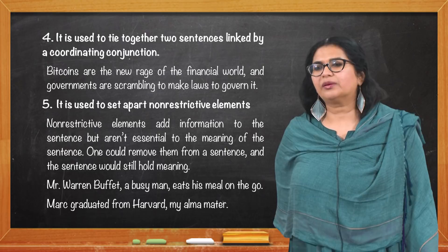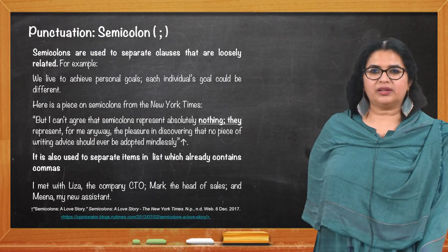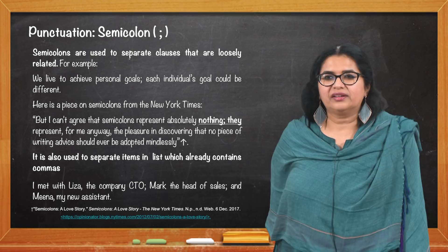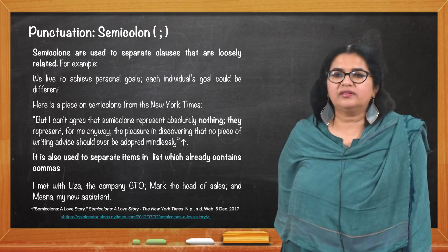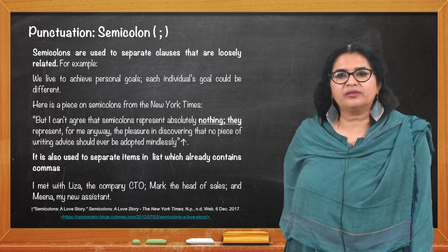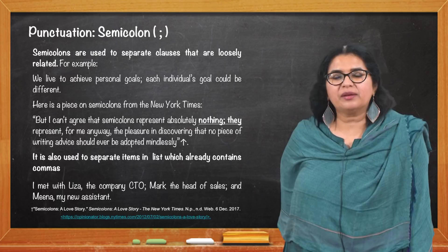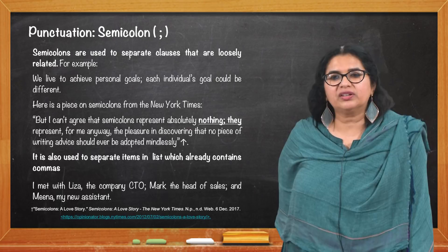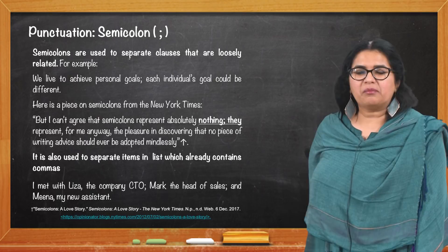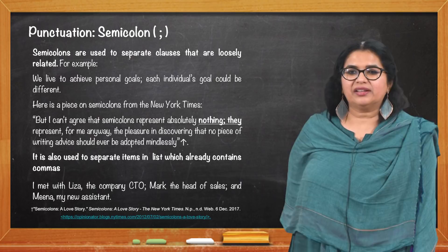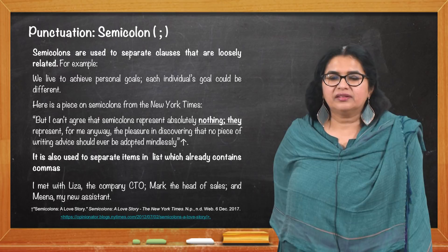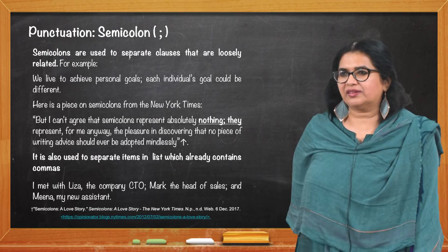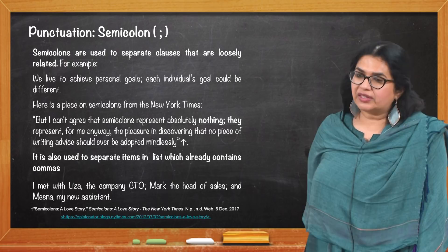Semicolons are used to separate clauses that are loosely related. For example: 'We live to achieve personal goals; each individual's goals could be different.' As the New York Times noted: 'semicolons represent for me the pleasure in discovering that no piece of writing advice should ever be adopted mindlessly.' Semicolons are also used to separate items in a list which already contains commas: 'I met with Liza, the company CTO; Mark, the head of sales; and Meena, my new assistant.'